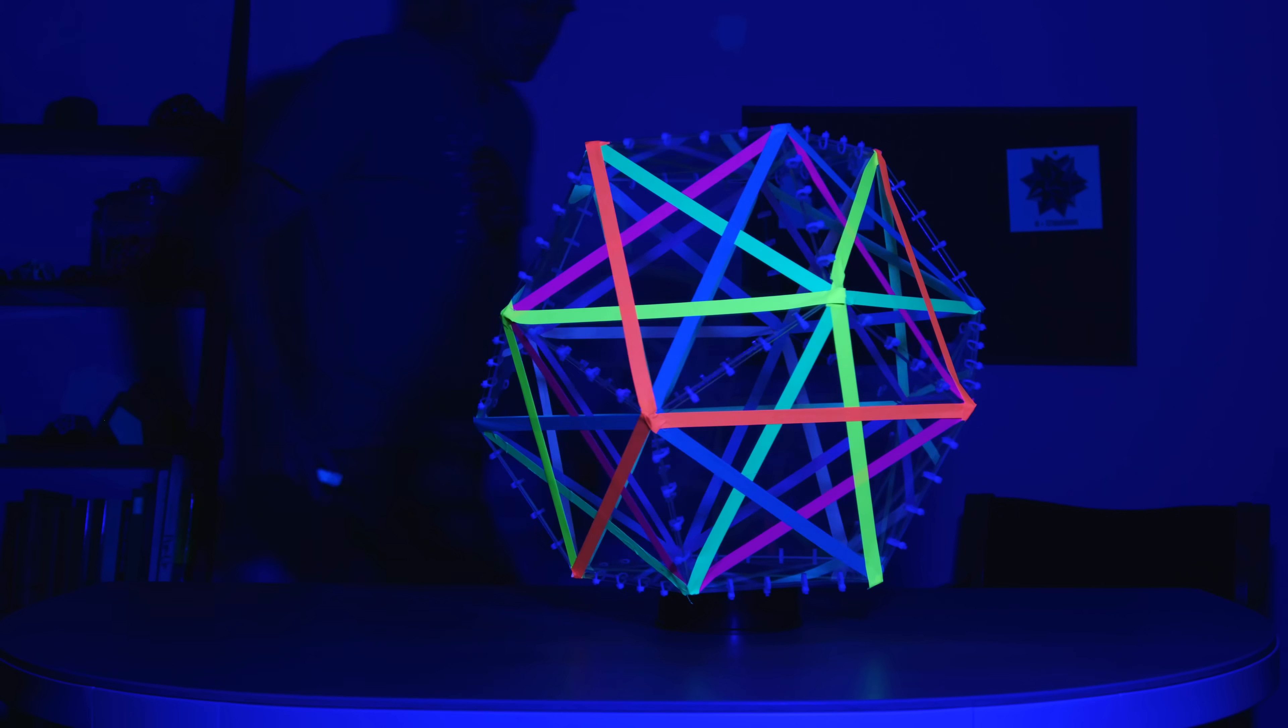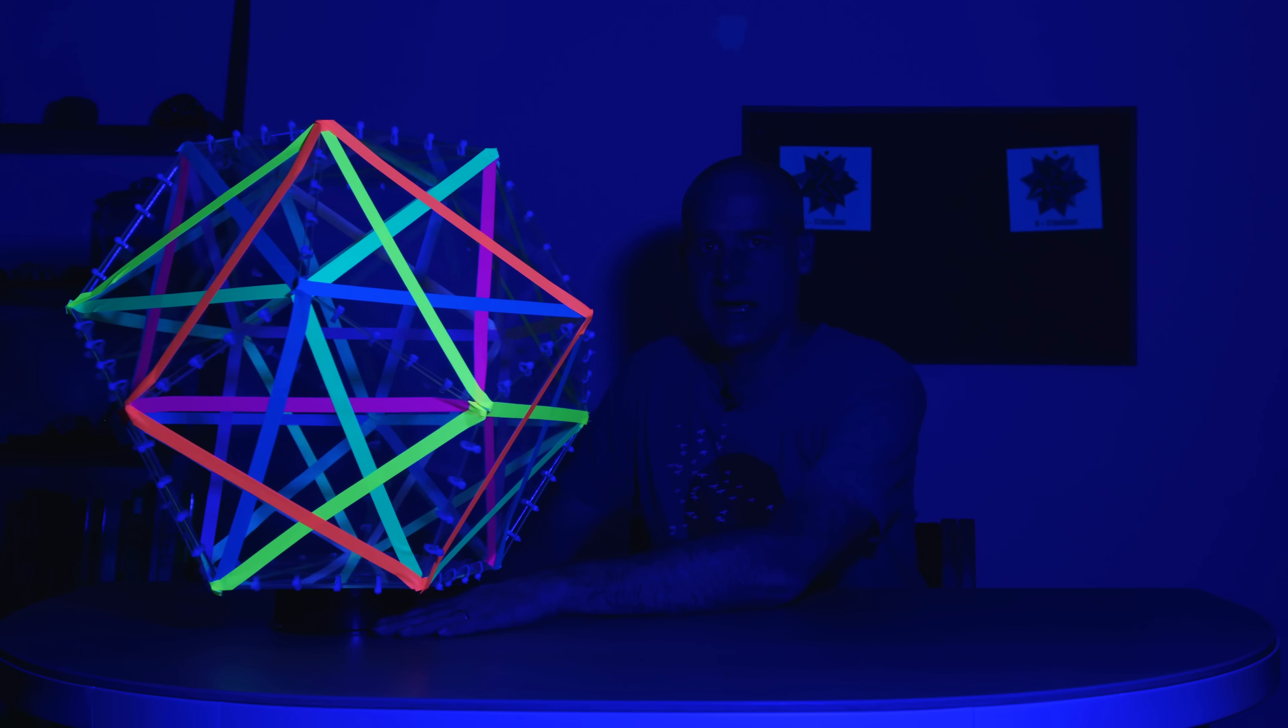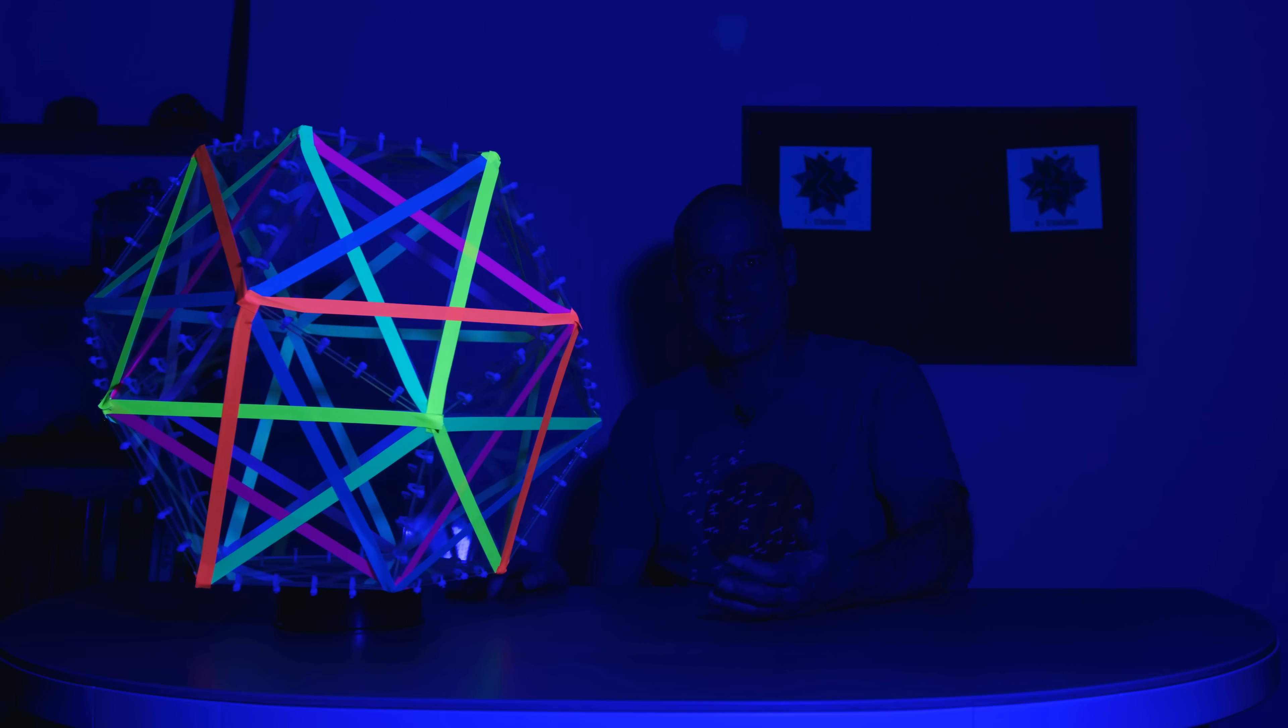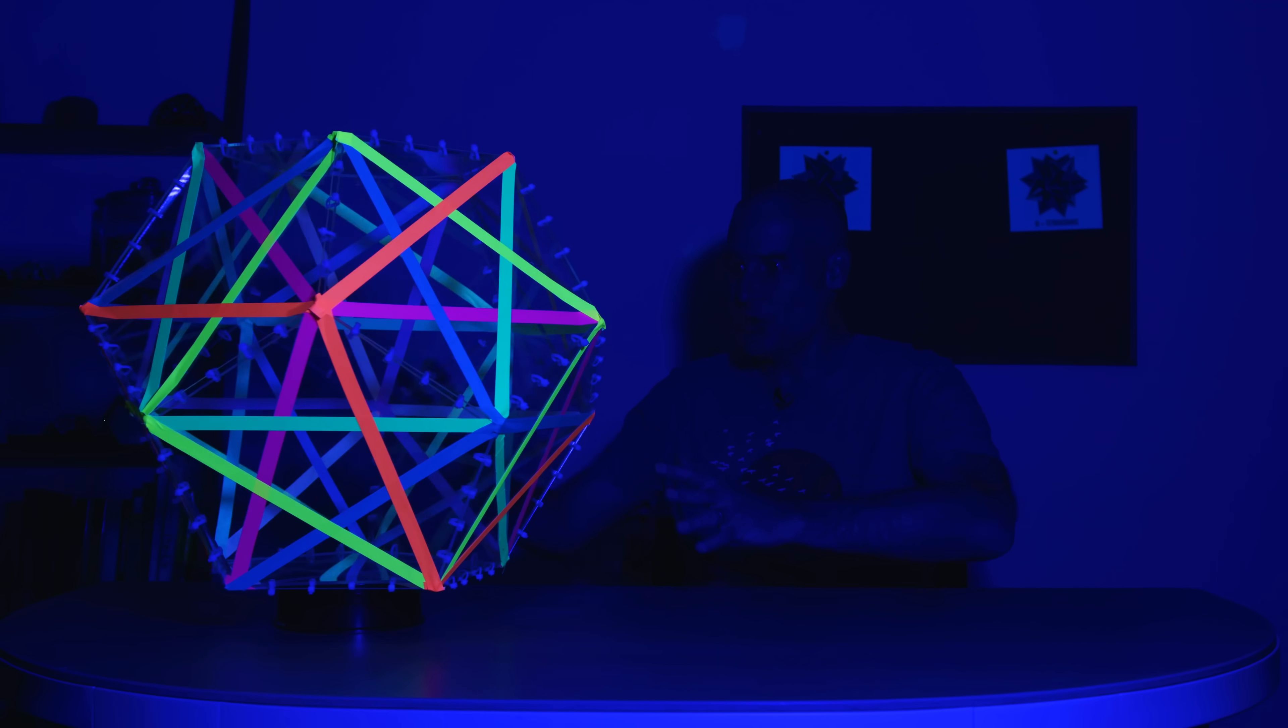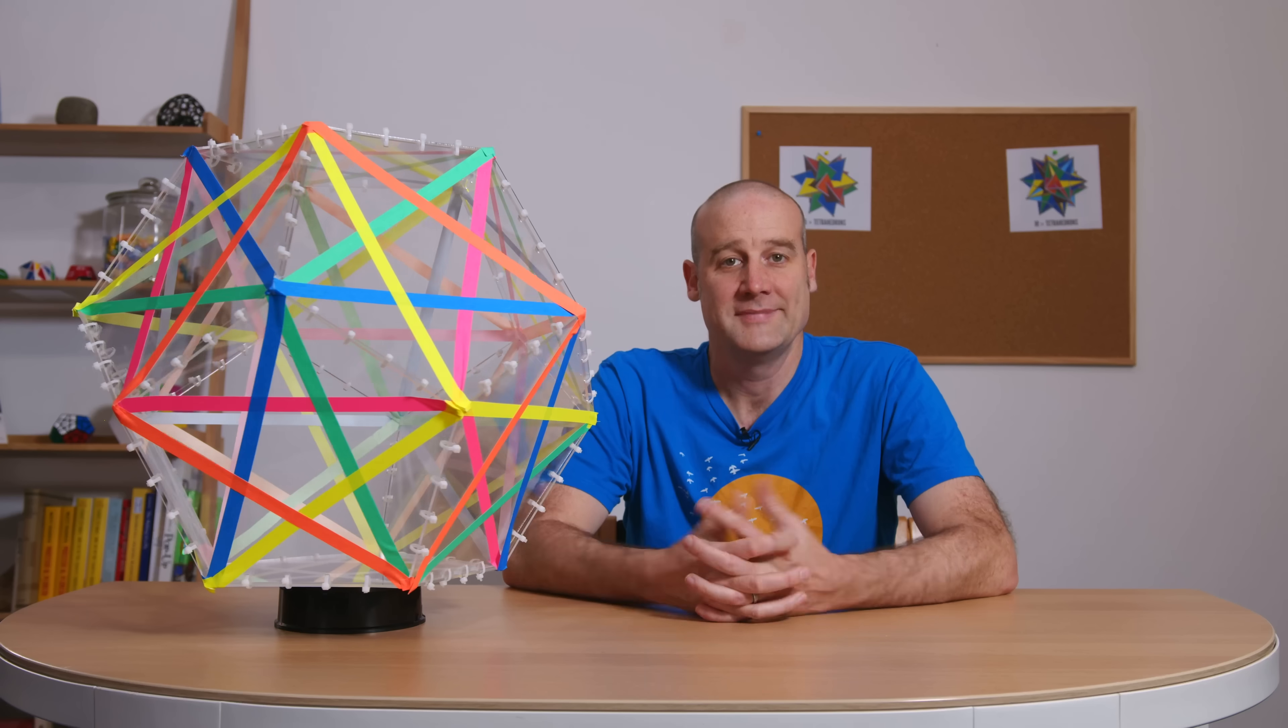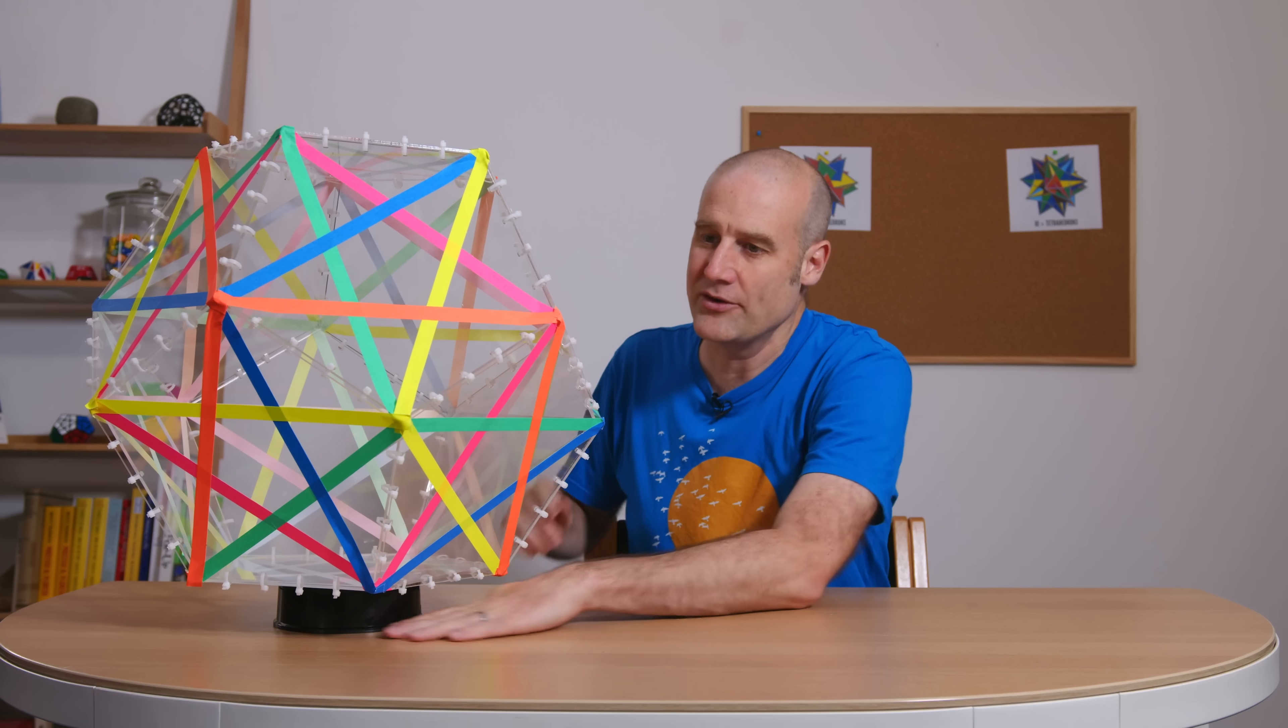All right. Isn't that absolutely incredible? So we've got all 60 face diagonals are now labeled in five different colors, 12 each. And that gives us five intersecting cubes, which is a compound regular polyhedron. I might put a handful of lights back on again.